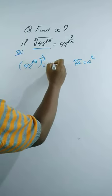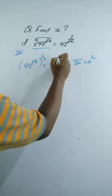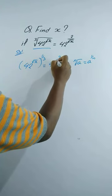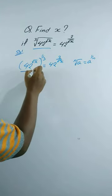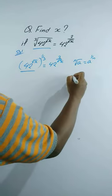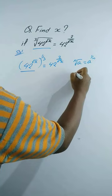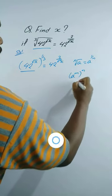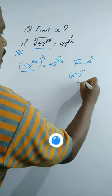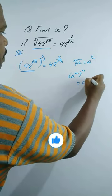This is equal to 42 to the power 2 by square root x. To solve this, we will use the exponential rule: a to the power m, whole to the power n, is equal to a to the power mn.